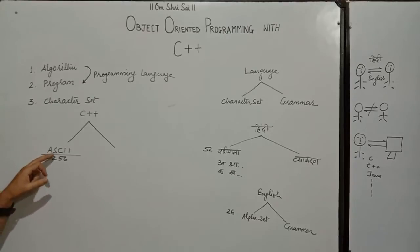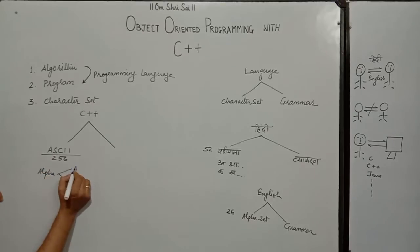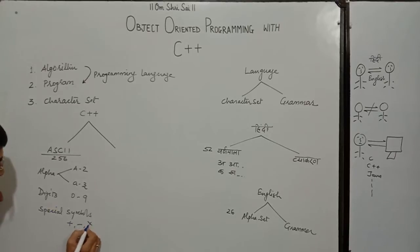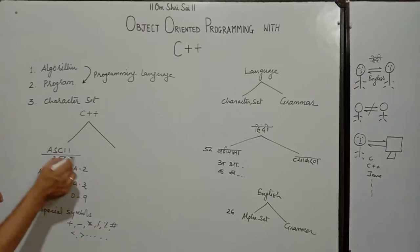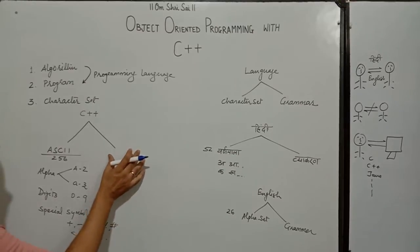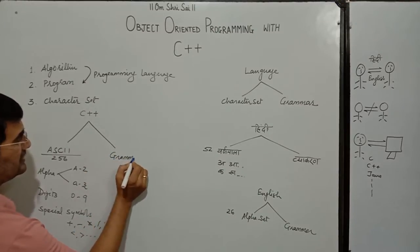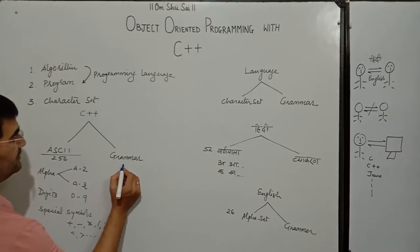This stands for American Standard Code for Information Interchange consisting of 256 characters in it. They are, first is alphabet sets, capital A to capital Z, small a to small z, then digits 0 to 9 and then remaining are the special symbols, plus, minus, multiplication, division, mod, hash, less than, greater than and so on.